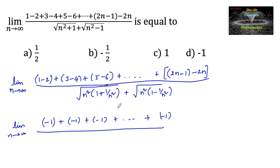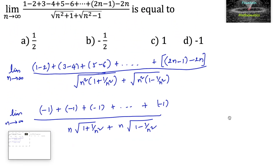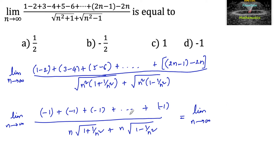So, root of n squared is n, giving n times root of (1 plus 1 by n squared) plus n times root of (1 minus 1 by n squared) in the denominator. Since there are 2n terms total, there are n pairs, each contributing negative 1, so the numerator is negative n. We can write the limit as n tends to infinity of (negative n) divided by the denominator, and n can be taken common.